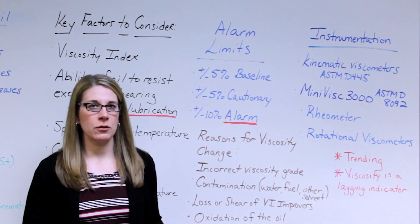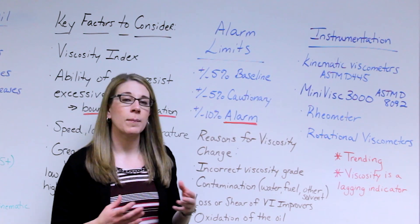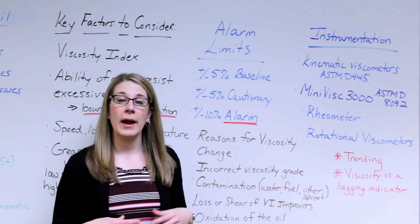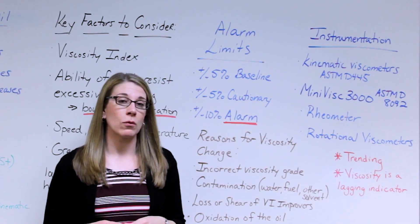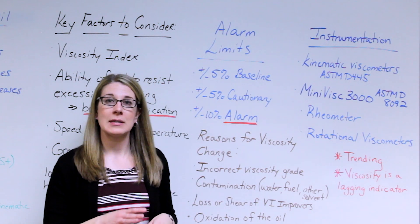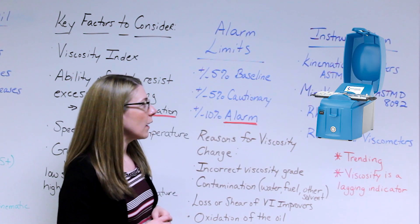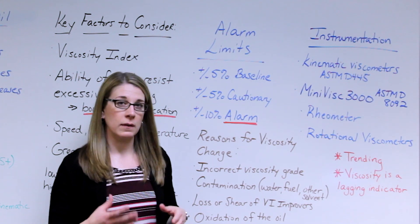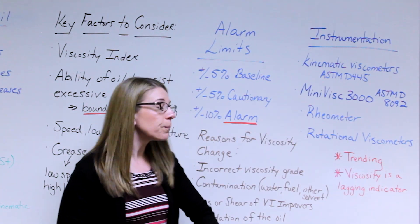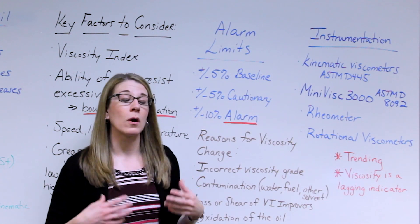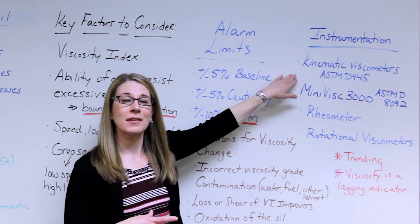What are some common techniques for measuring viscosity? In an oil analysis laboratory they're typically using kinematic viscometers using a U-tube or a glass capillary tube. That is run per ASTM D445. Those results are typically reported out in centistokes. And in our Minilab system we have the Minivisc 3000 that is also reported out in centistokes and is a kinematic viscosity method per ASTM D8092.